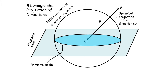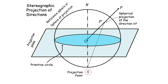I introduce an axis perpendicular to the projection plane which intersects the sphere at N and S, known as the north and south poles. Either of these poles can be used to convert the spherical projection on the sphere to a stereographic projection on the plane. Let us choose the south pole S as our projection point. I join S to P-prime, and this line intersects the projection plane at PS. PS is the stereographic projection of the direction OP.